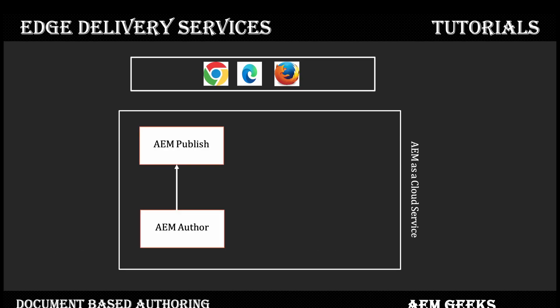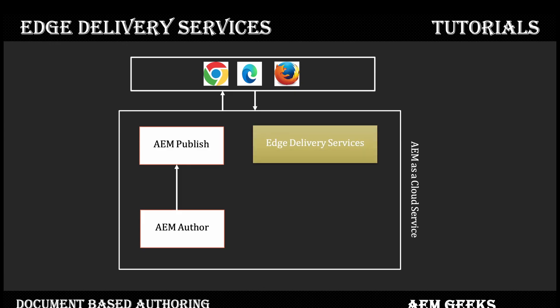In a normal use case without Edge Delivery Services, we have an AEM publish tier and an AEM author tier. The author tier is used to create content, and the publish tier is used to serve content. As soon as a request comes in, content is served back from the edge. With Edge Delivery Service, the AEM publish tier or web server is no longer required.